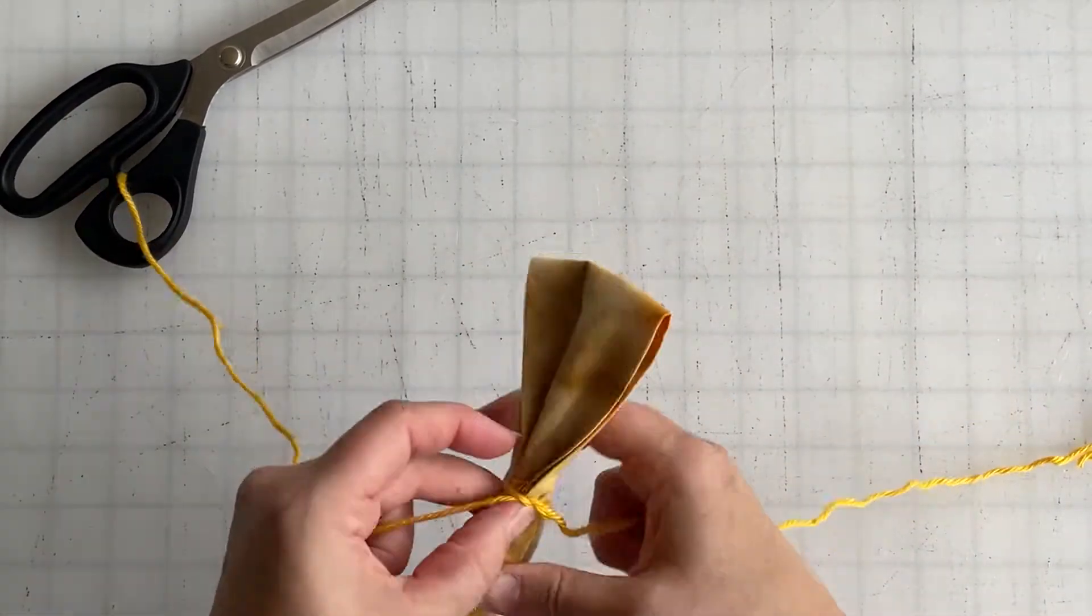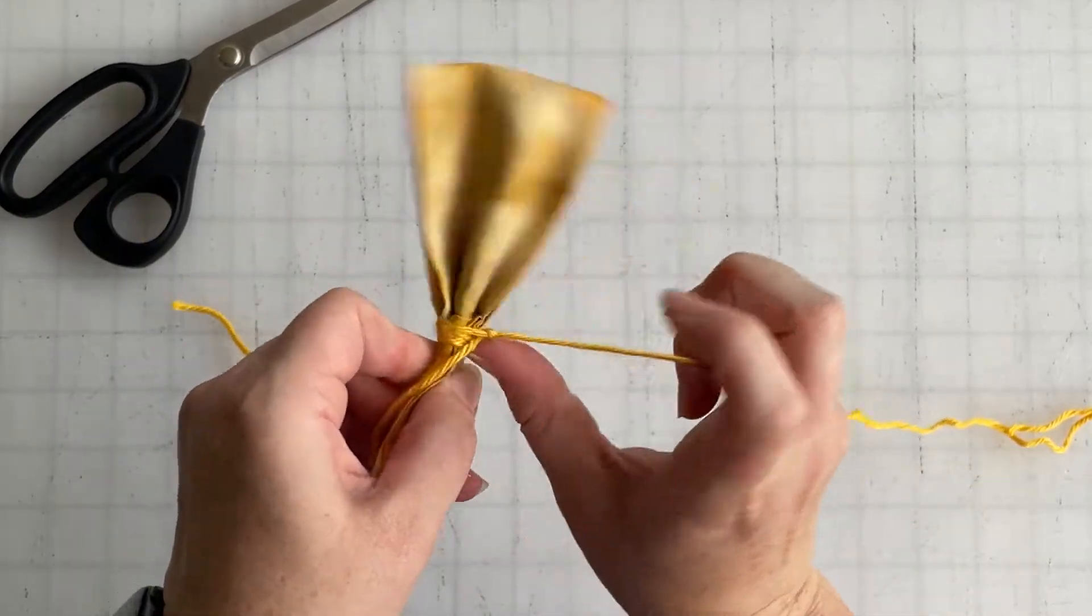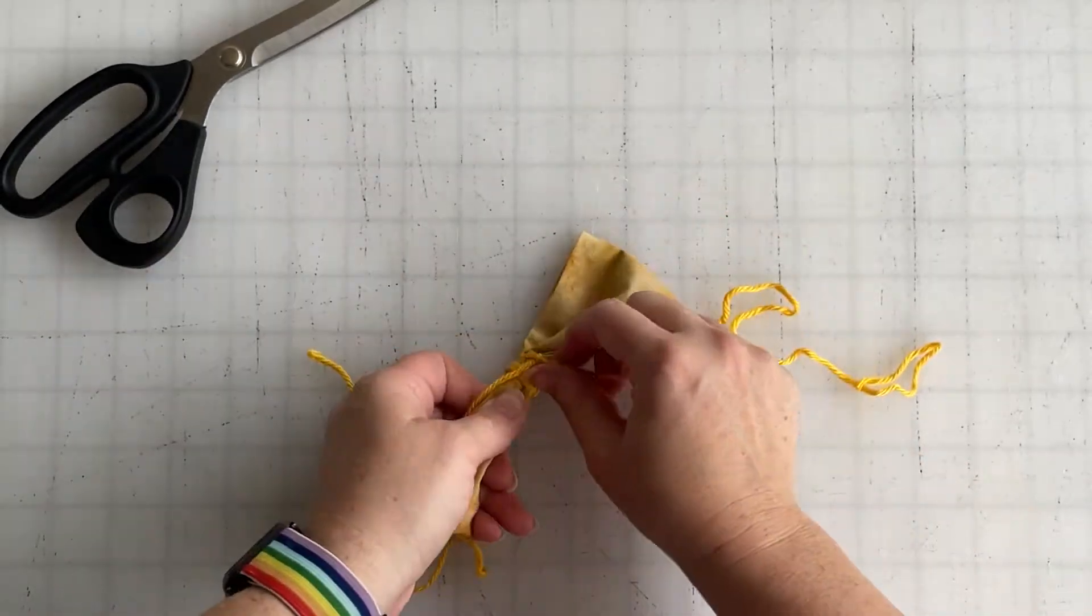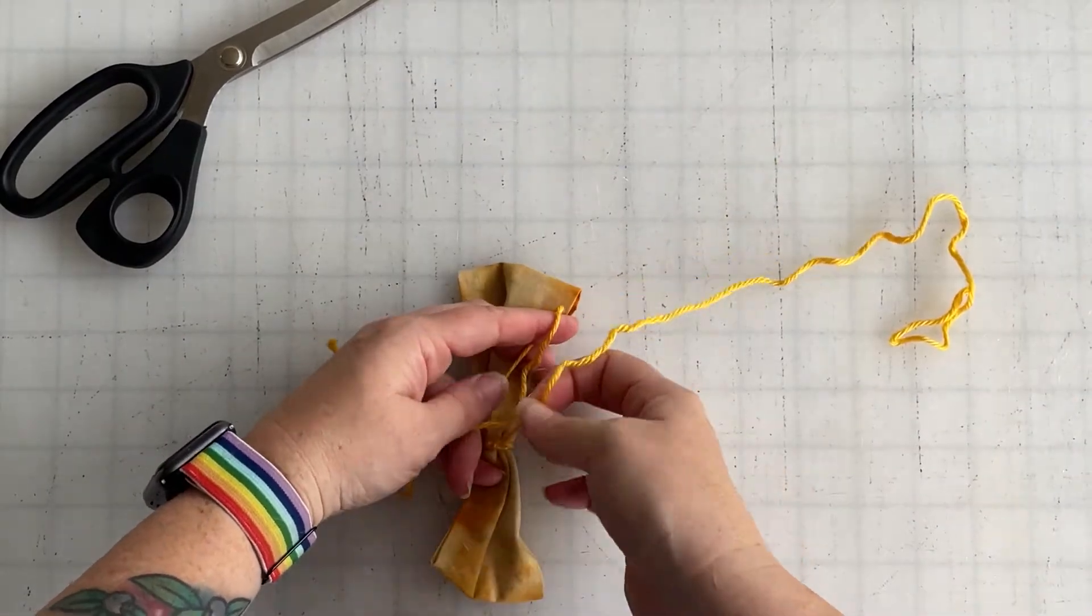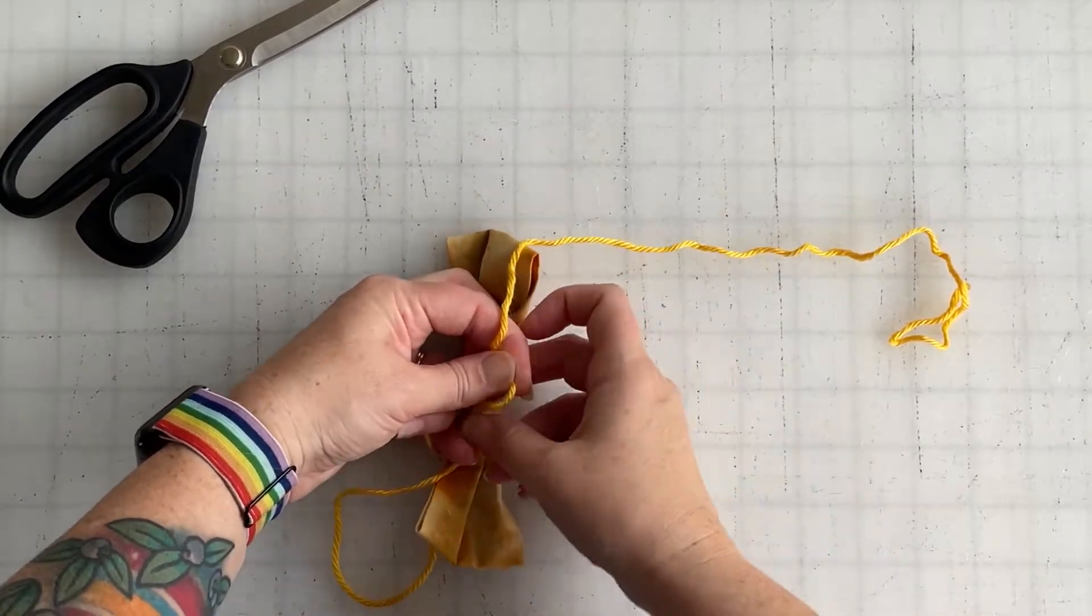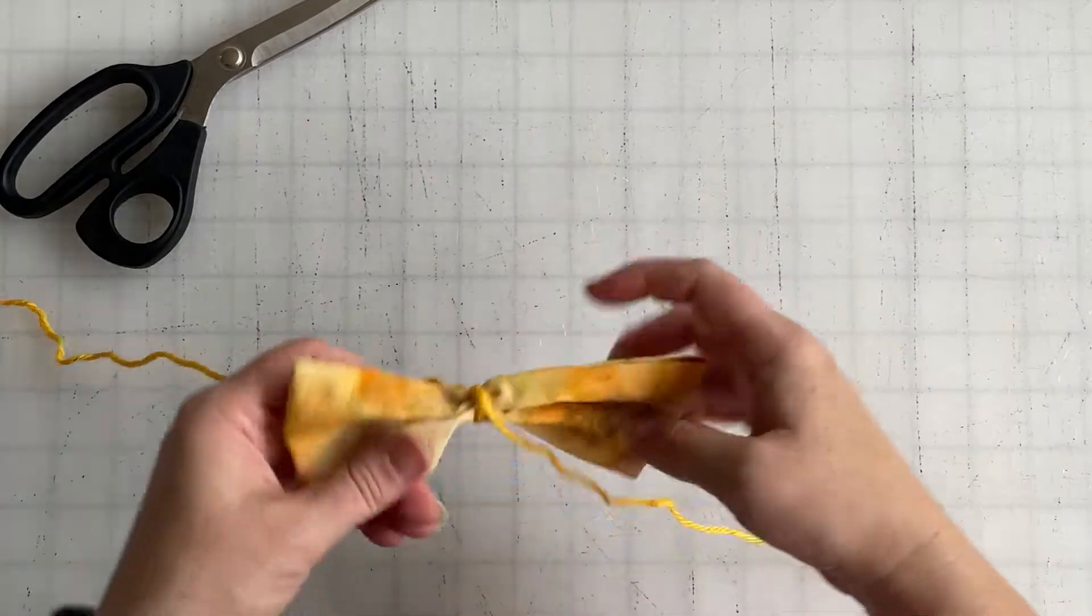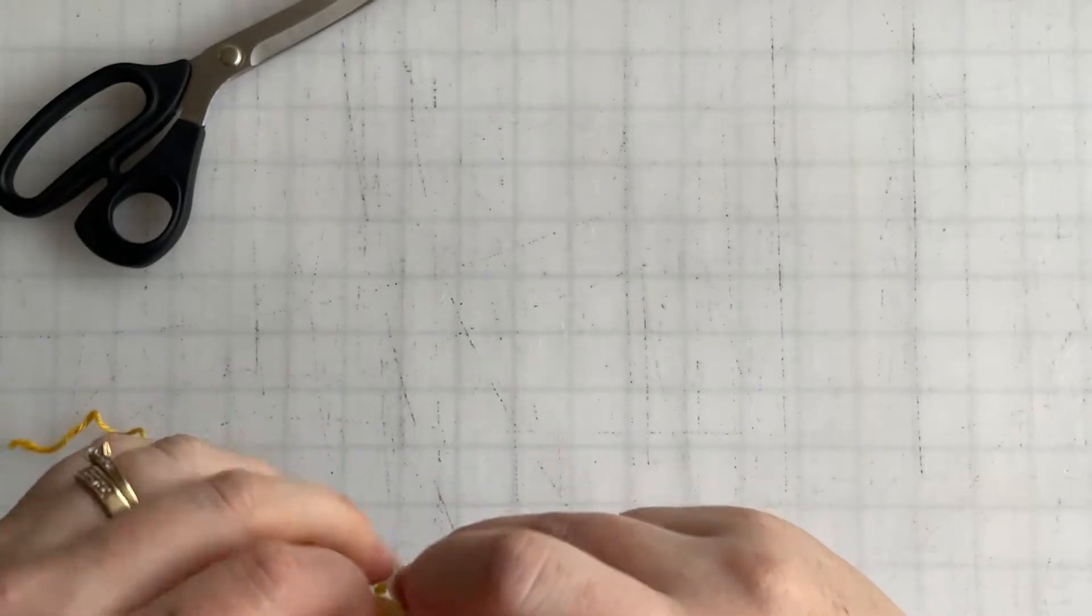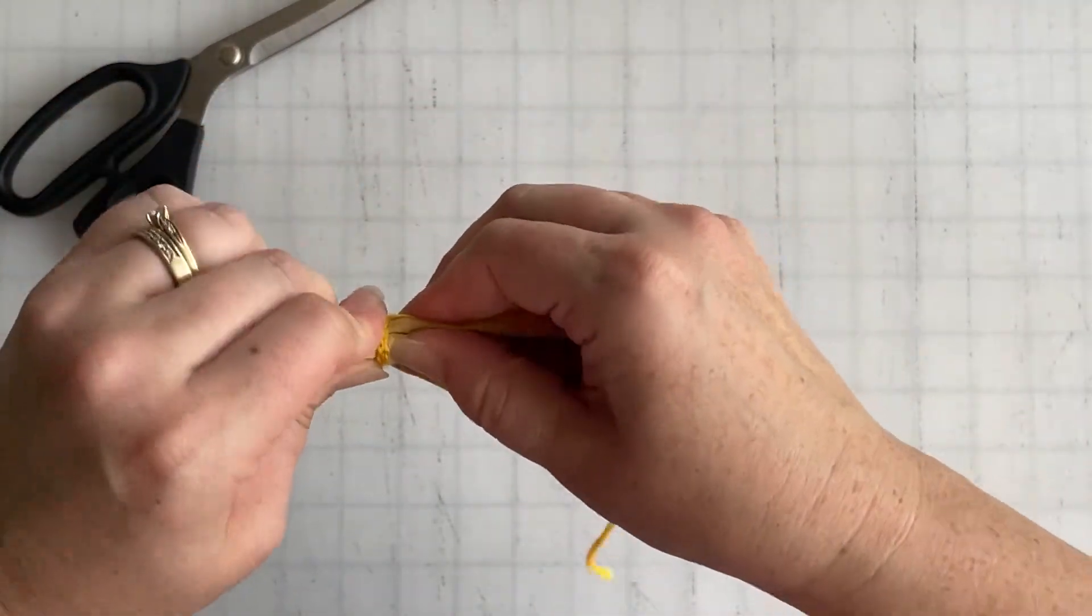I think when I do things on camera I become very uncoordinated. Okay, so we have that tied, give it another knot. Elastic is a lot easier I suppose. So here's our scrunched up bow with a knot, and if you get it off center like me just slide your knot into the middle.